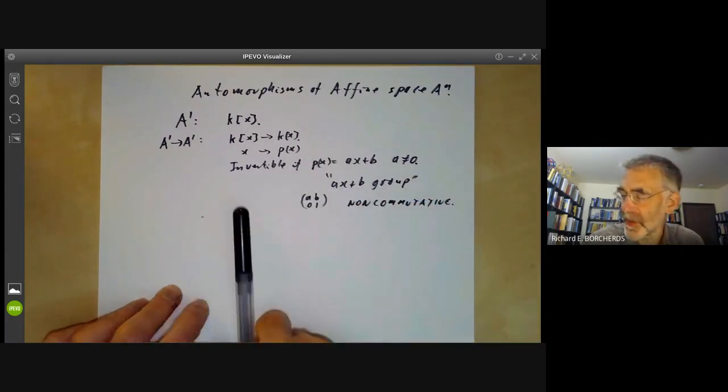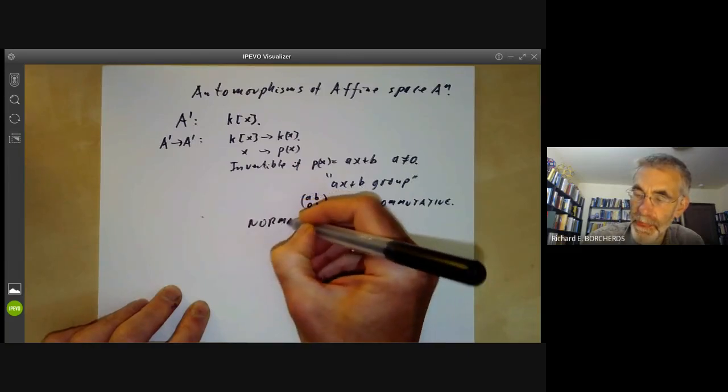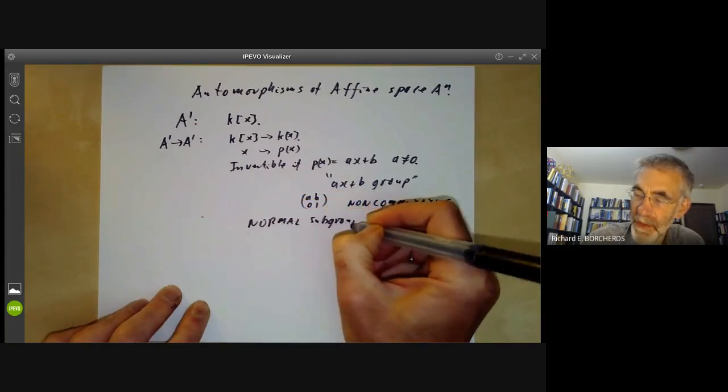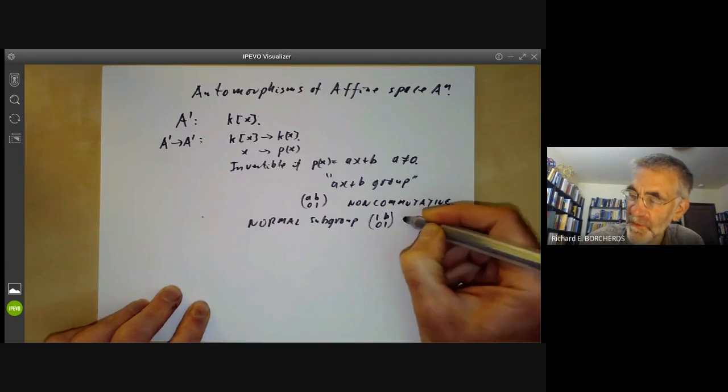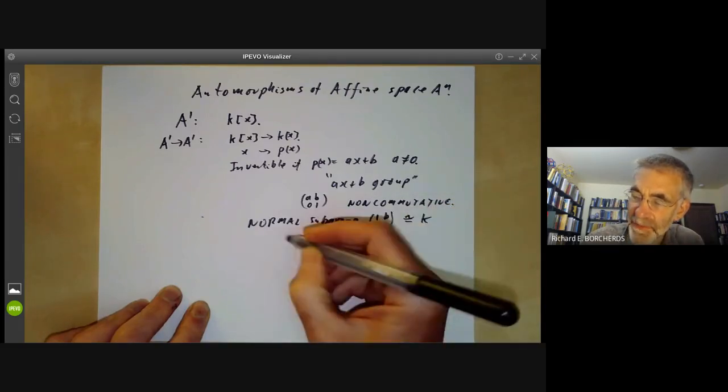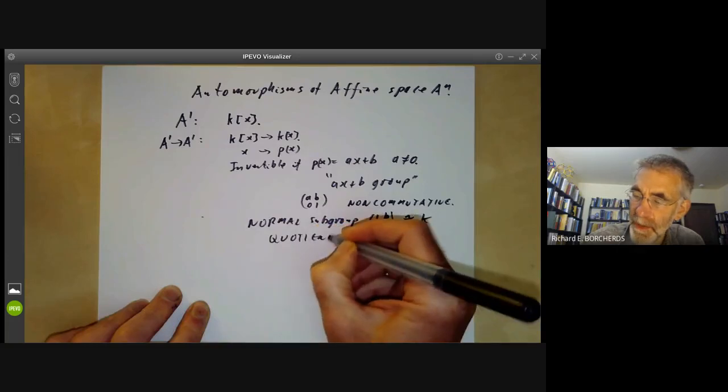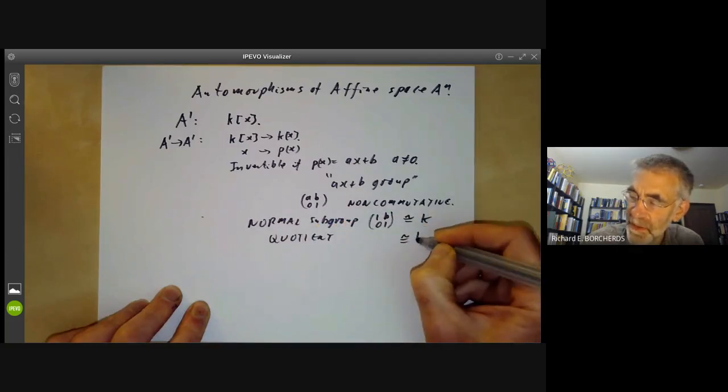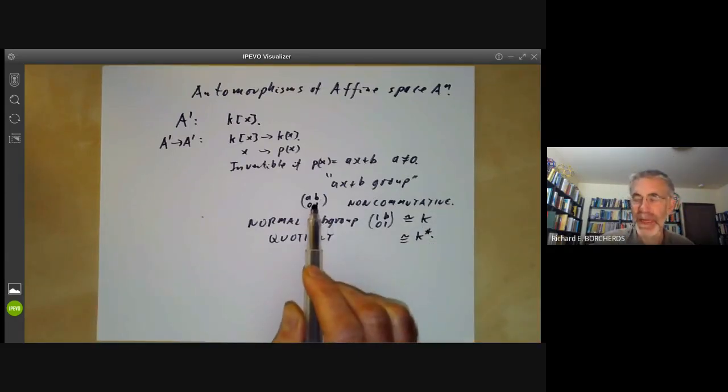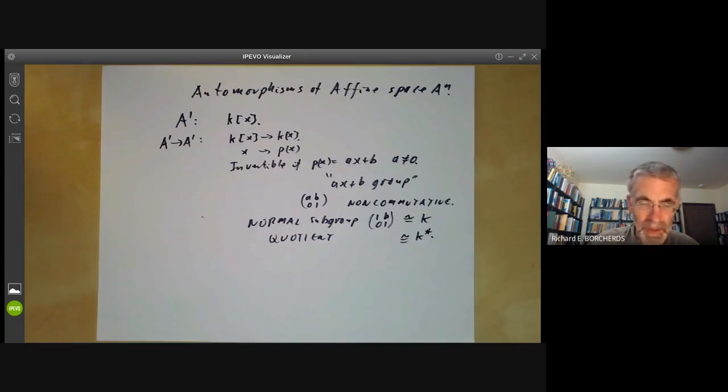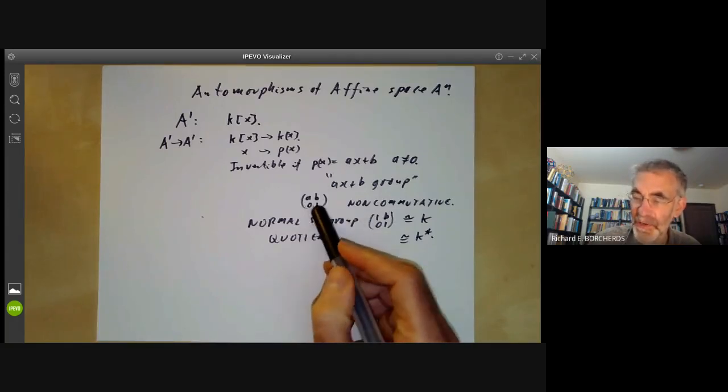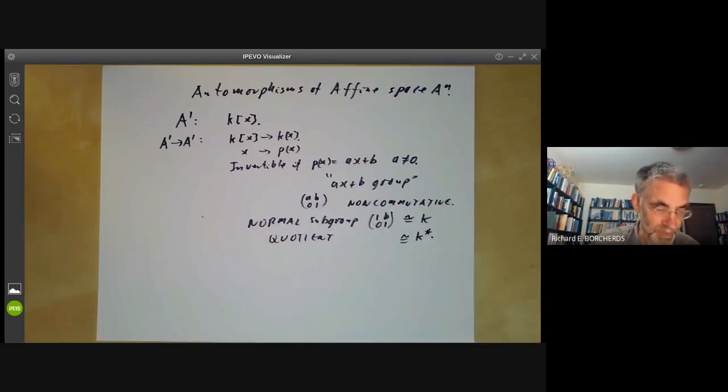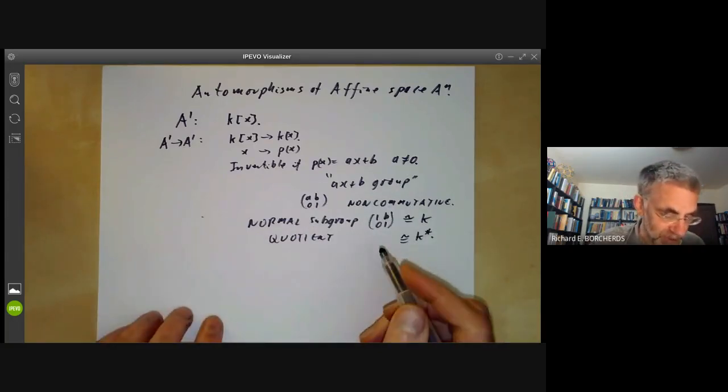You can identify it with two-by-two matrices of the form [a,b; 0,1]. It's got a normal subgroup consisting of elements of the form [1,b; 0,1], which is isomorphic to the additive group of K, and the quotient is isomorphic to the multiplicative group of K. This group is a counterexample to quite a lot of things. For example, over the real numbers, this is the simplest example of a group where the left-Haar measure is not the same as the right-Haar measure.